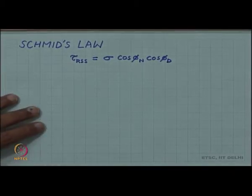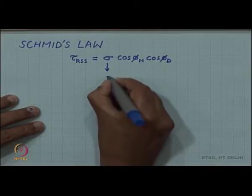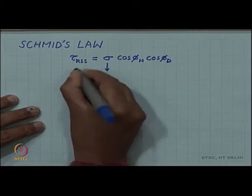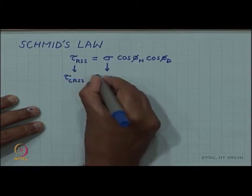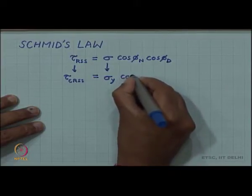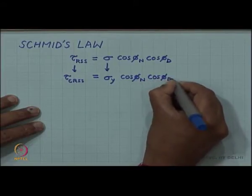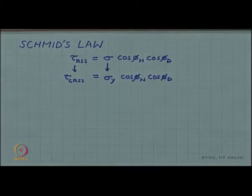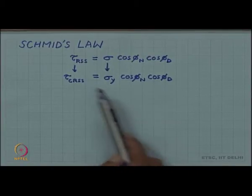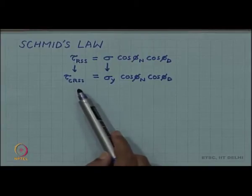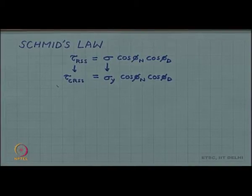Now, when the applied tensile stress reaches the yield stress σ_y, the resolved shear stress reaches its critical value — the critical resolved shear stress — which equals σ_y times cos φ_n times cos φ_d. Now, yield stress appears to be a material property, and so does the critical resolved shear stress. Critical resolved shear stress can be thought of as a microscopic yield stress.